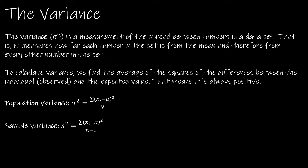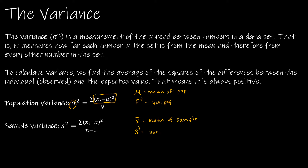Don't worry — all this means is we're going to find the mean. Mu means the mean of the population, and x-bar means the mean of a sample, which is why you see different notation for population and sample. Sigma squared is the variance of the population, whereas s-squared is the variance of the sample.